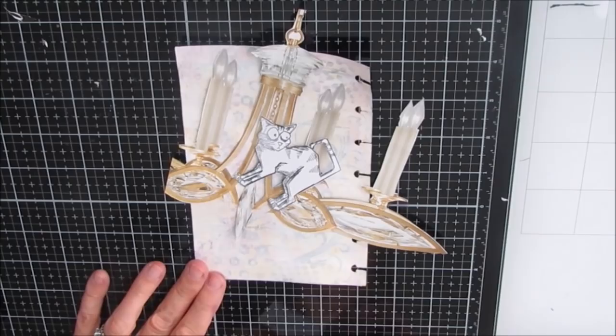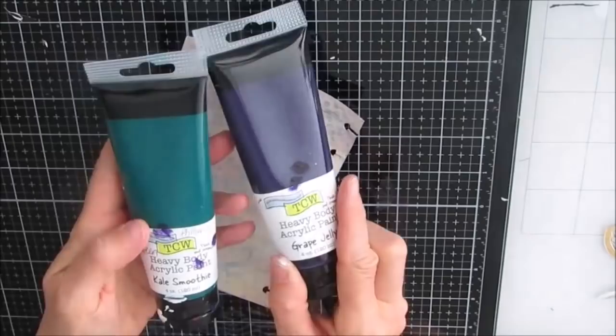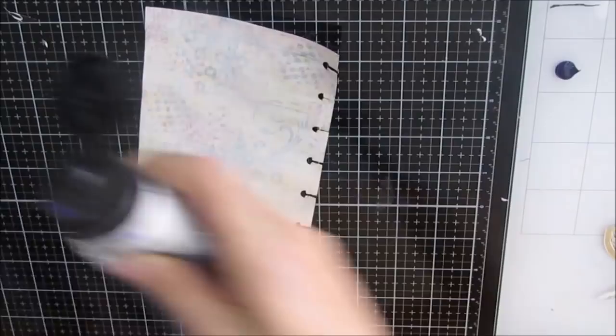Then I thought, you know what, I'm going to grab one of the Tim Holtz crazy cats and I'm going to have the cat swinging from the chandelier. Because the chandelier is so decorative and so ornate and I really wanted that to be the focal image, I didn't want a whole lot of pattern in the background.